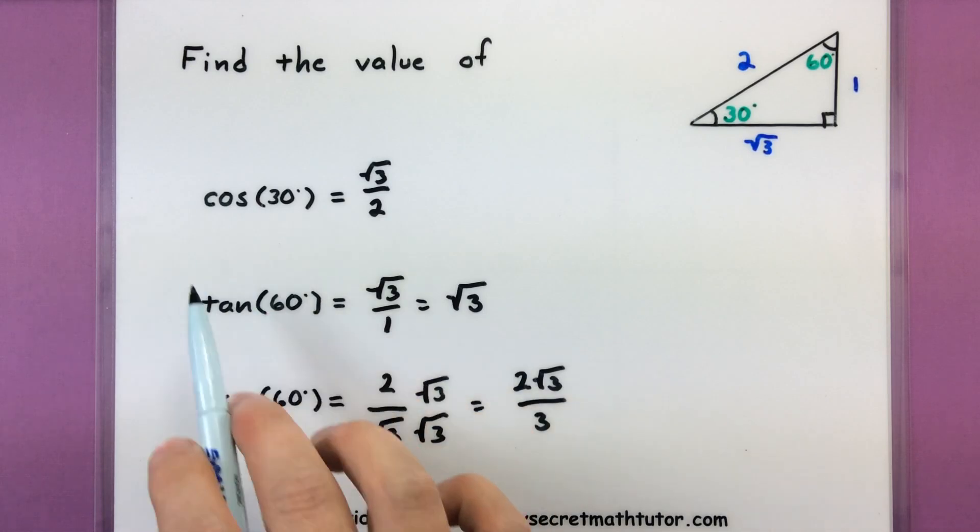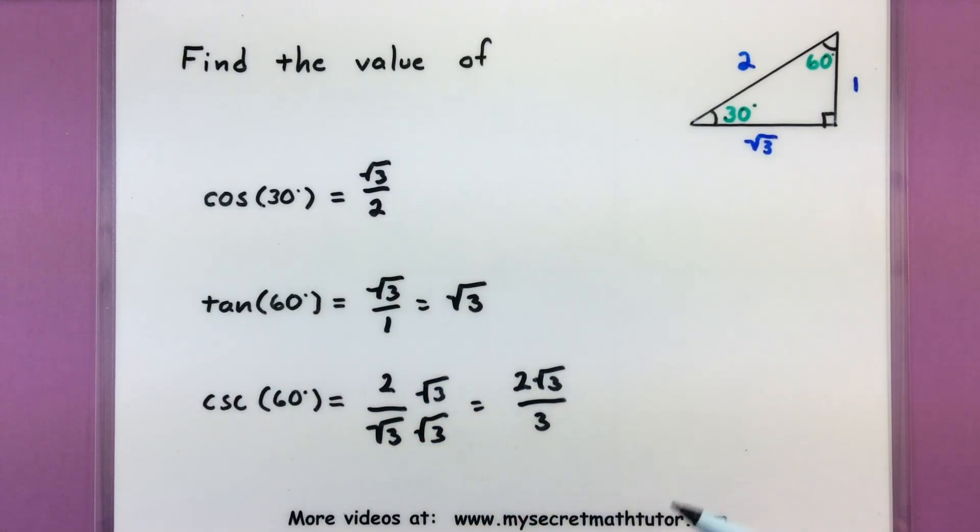So if I see these key angles in there like 30-60, this gives me information about the triangle that's really working in the background, and it might be one of these special triangles.